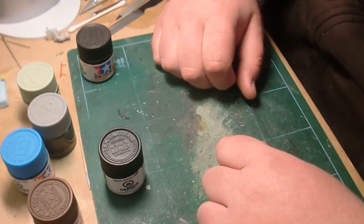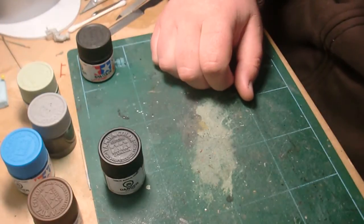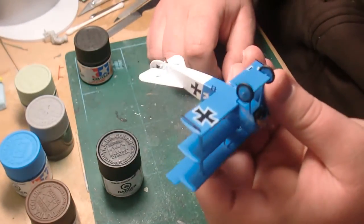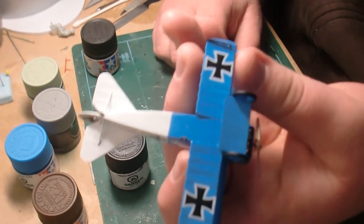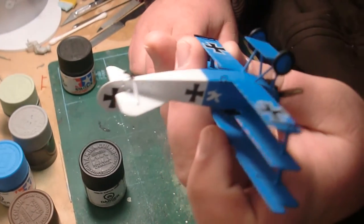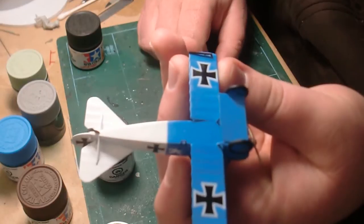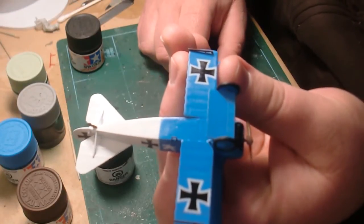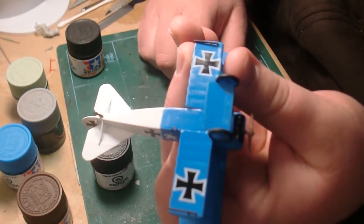So I gave it a coat of Future and said I'm done, I'm just gonna cut my losses. It's not too bad, especially now that I put the Future on it. I'm just gonna say I did it on purpose so it would look like canvas.